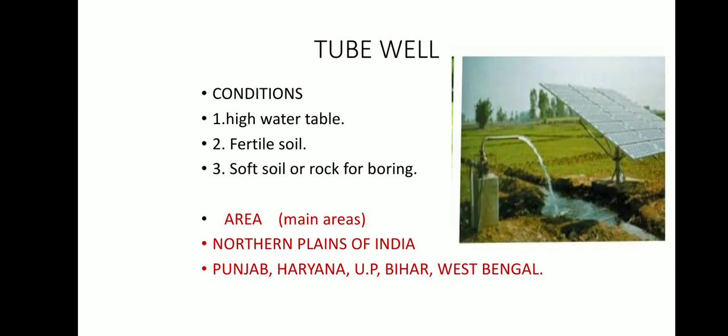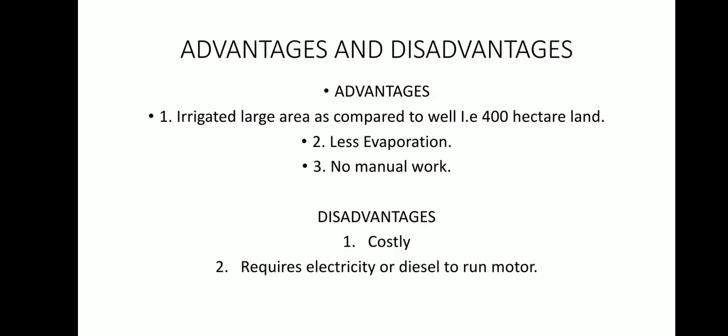Tube well irrigation — the conditions are again a high water table and fertile soil in the area where the tube well is installed. The soil or rock should be soft enough for boring. The areas where tube well irrigation has been practiced are the northern plains of India — Punjab, Haryana, Uttar Pradesh, Bihar, and West Bengal.